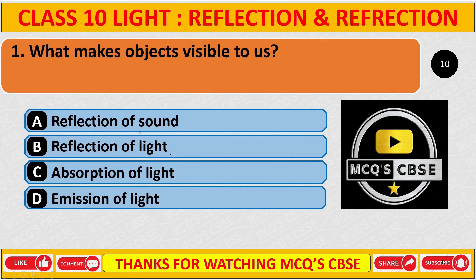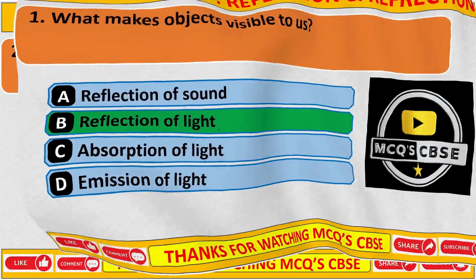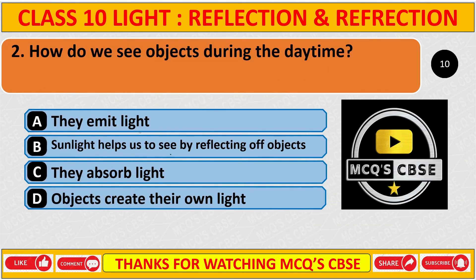What makes objects visible to us? The correct answer is the reflection of light. How do we see objects during the daytime? The correct answer is that sunlight helps us to see by reflecting off objects.